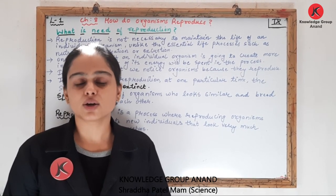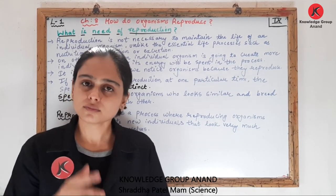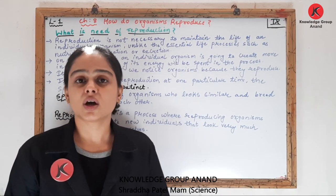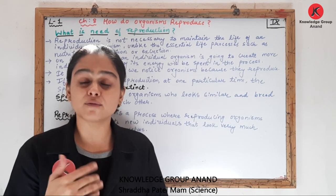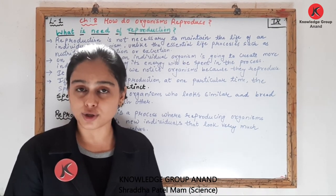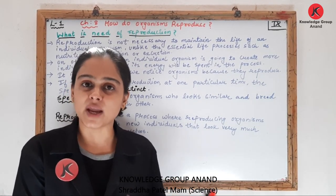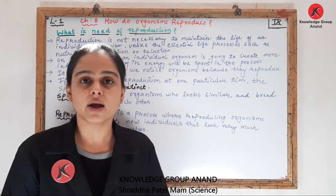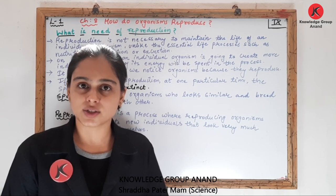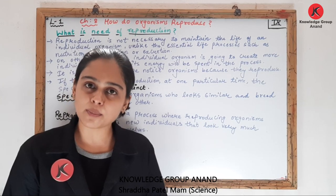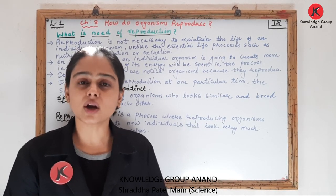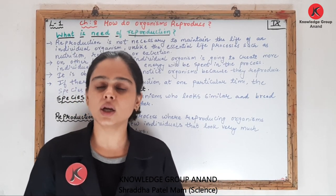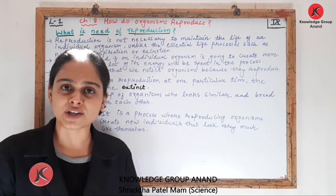Then we are going to discuss sexual reproduction, again in both plants as well as animals. If we are talking about sexual reproduction in plants, we are talking about flowering plants. You people are familiar with the male and female reproductive parts in a flower — that is stamen and carpel. Stamen is the male reproductive structure, and carpel is the female reproductive part.